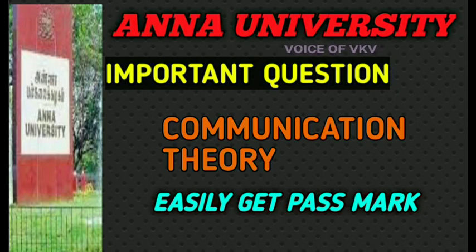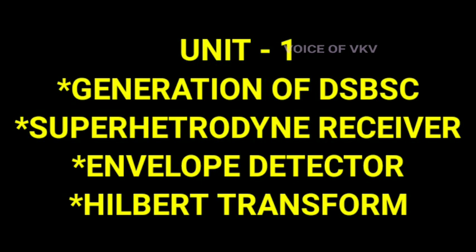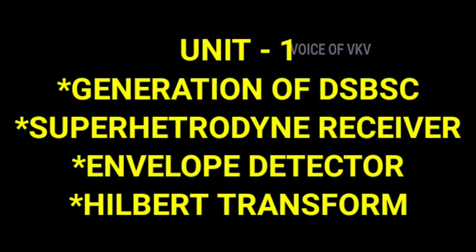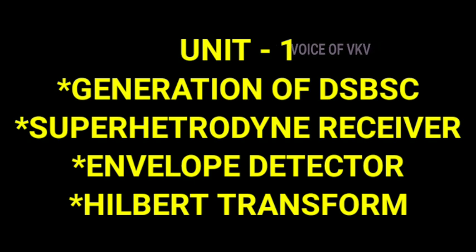There is a total of 5 units, with 4 important topics in each unit. The first unit topics are: first, Generation of DSB-SC; second, Super Heterodyne Receiver; third, Envelope Detector; and fourth, Hilbert Transform. Let's talk about the sub-topics.